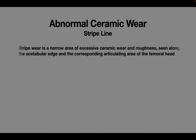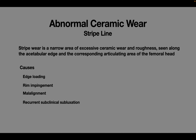A stripe line or stripe wear is a narrow area of excessive ceramic wear and roughness. It is seen along the acetabular edge and the corresponding articulating area of the femoral head. Similar to ceramic fractures, the proposed causes are edge loading due to attempted movement beyond the levering range, rim impingement, malalignment, and recurrent subclinical subluxation. When stripe wear leads to failure of the prosthesis, revision and realignment of the prosthesis are needed.